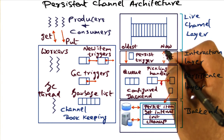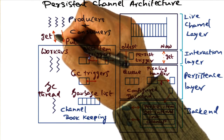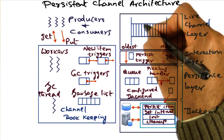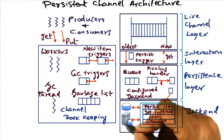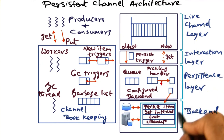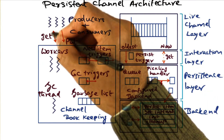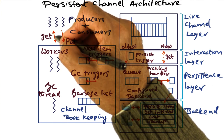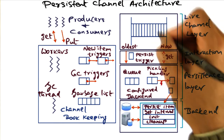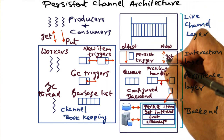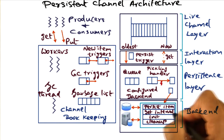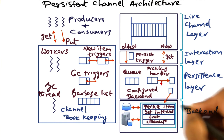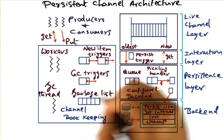On the other side, when an application wants to get an item, the requested item range may span from something in the live channel part of the three-layer architecture, or it could be on the archival storage. It is up to the runtime system to retrieve all items between a lower bound and upper bound specified by a get primitive. A get primitive that spans both live and archived items results in get triggers being passed from the live channel through the interaction layer to the backend, so that the backend layer can pull the data from archived storage and pass it up to the application.